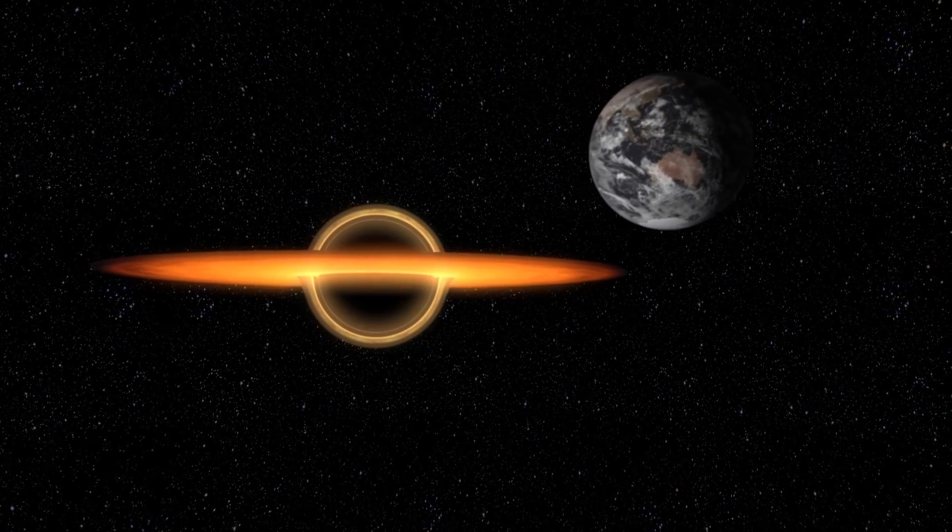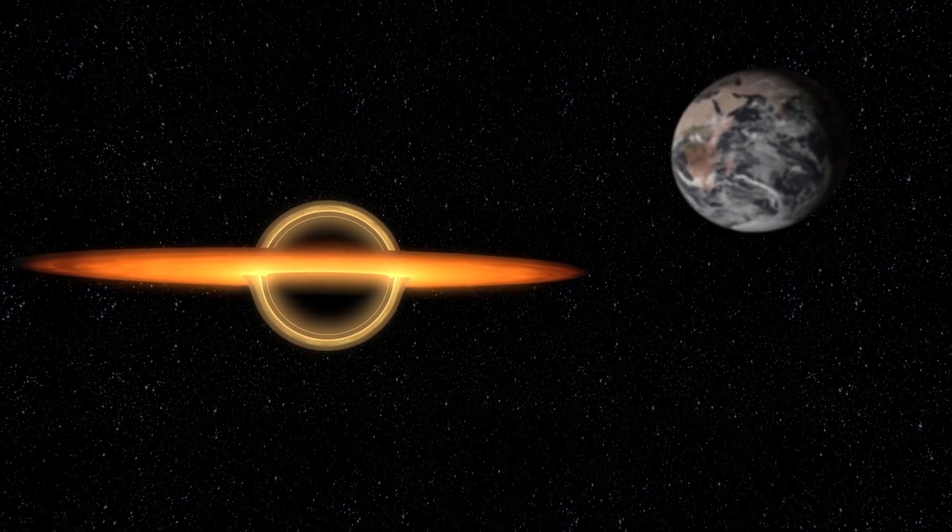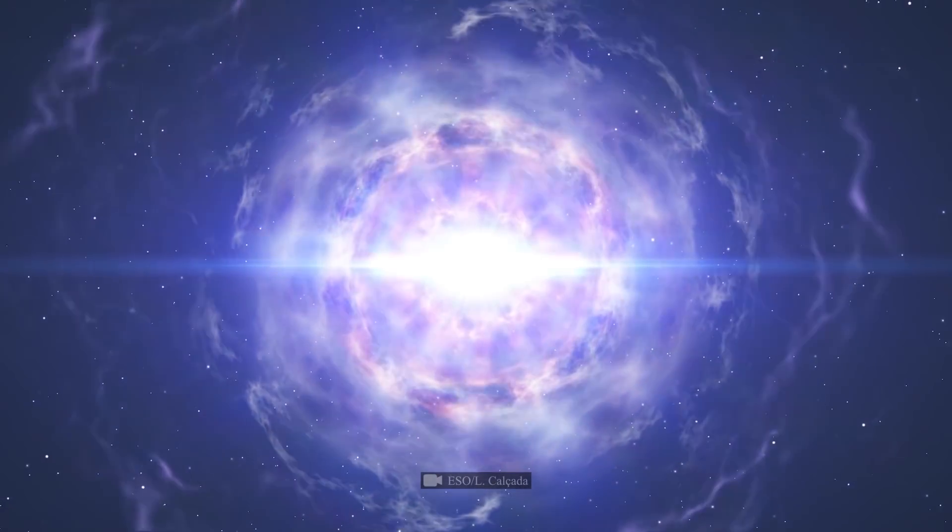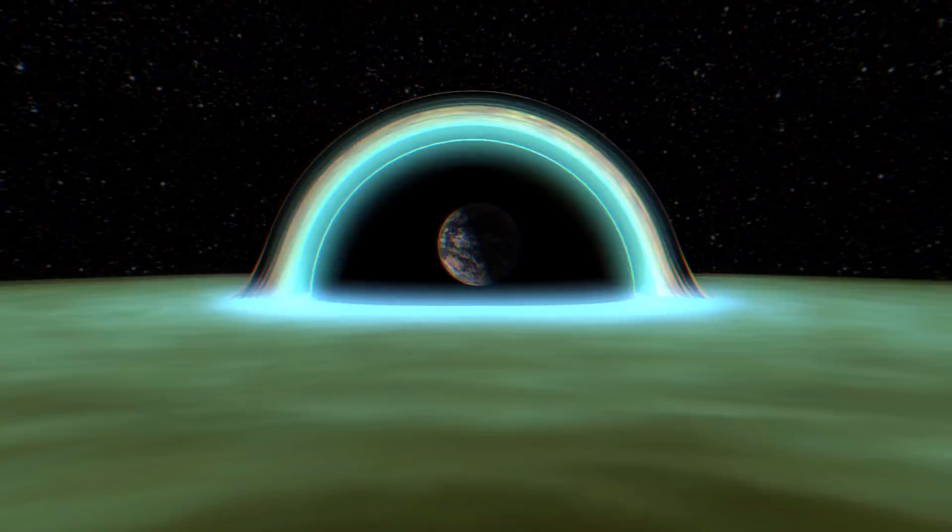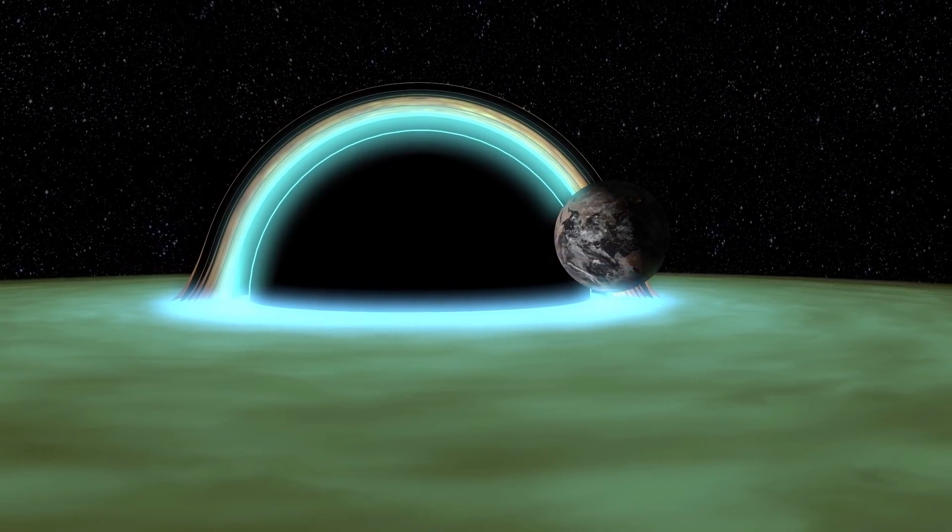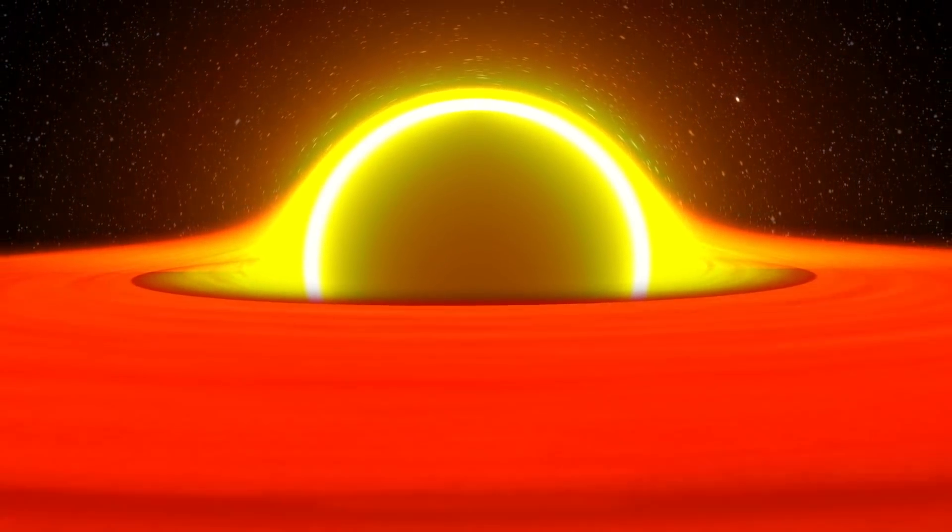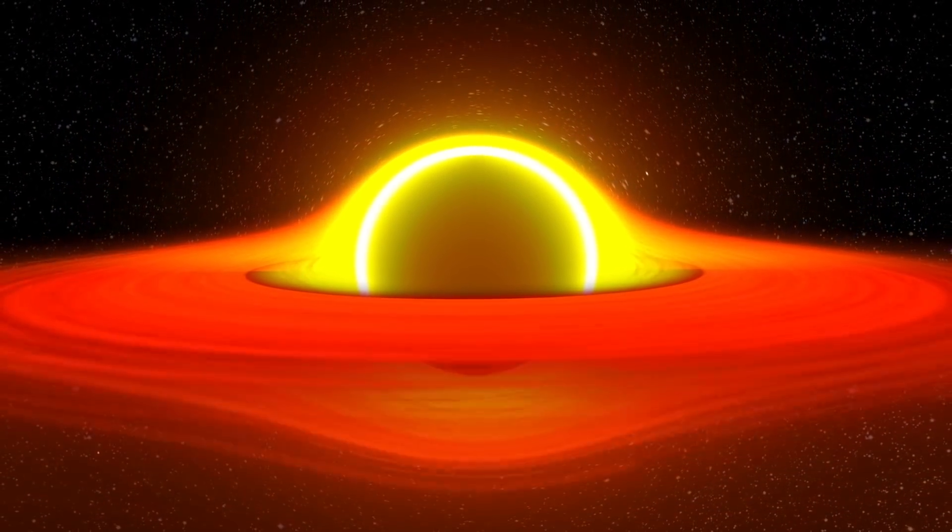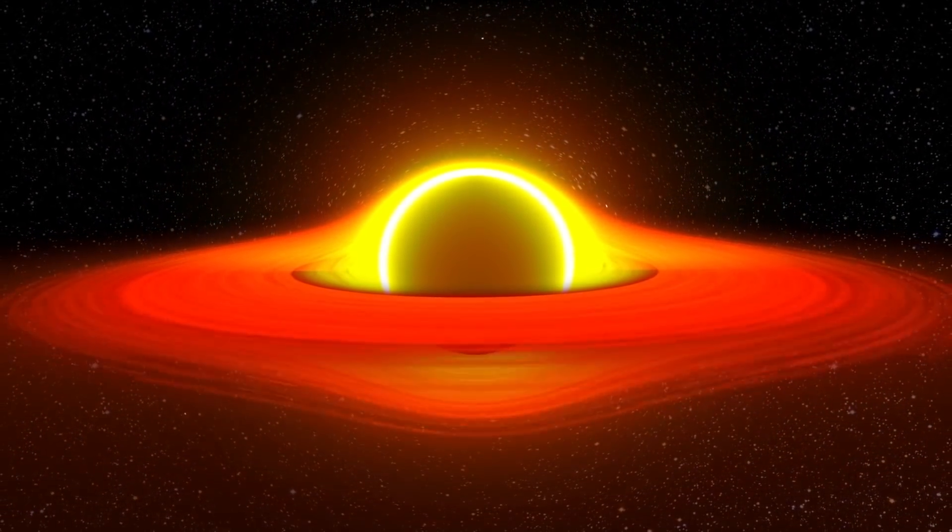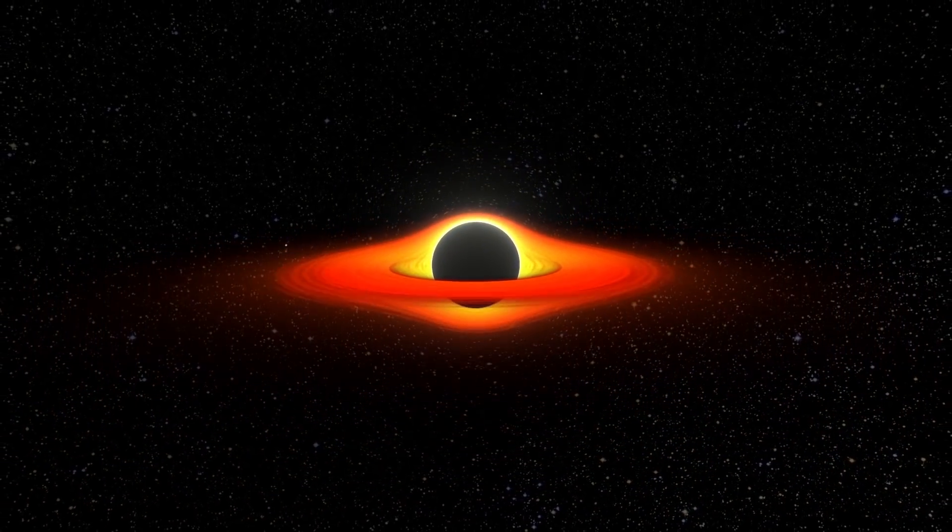And then the singularity would split it all down into literally nothing. But how soon this would happen, and if it would happen at all, depends on the mass of the black hole. In the case of black holes formed as a result of the collapse of a large mass star, this apocalypse on Earth would occur a few hundred kilometers or hundreds of miles from the event horizon. However, with an ultramassive black hole, not everything is so simple.